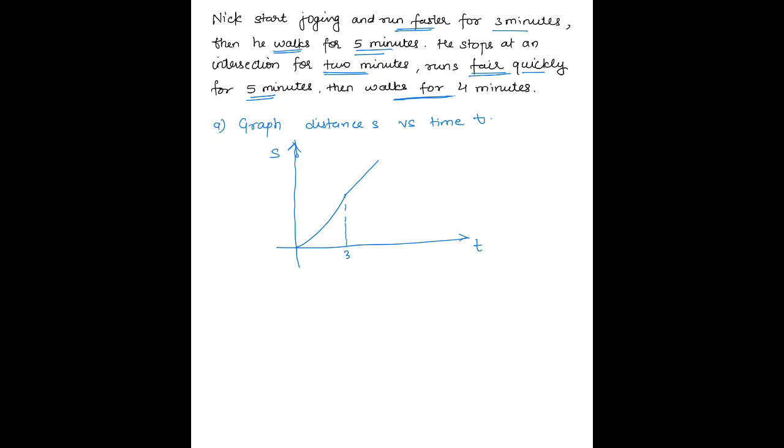Then he stops at an intersection for 2 minutes - that's at time 8, and this will be a horizontal line since there is no increment in distance. At time 10, he starts running fairly quickly again with an upward trend line for 4 minutes, ending at time 14. This is the graph for s versus t.